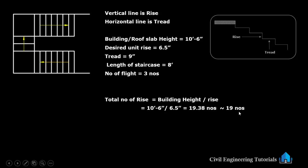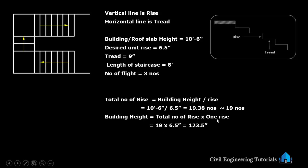So 10 feet 6 inch divided by 6.5 inch gives 19.38 numbers. We have to take it as a round number — 19 numbers. We cannot take 0.38. Now we check the building height: total number of risers into one rise. 19 risers into 6.5 inch equals 123.5 inch. Roof slab height is 10 feet 6 inch, that is 126 inch. 126 divided by 6.5 gives 19.38.